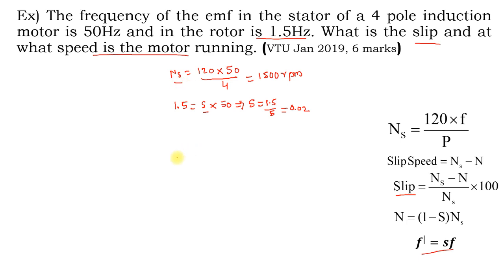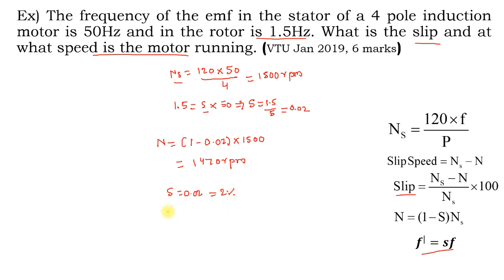Once the slip is known along with ns, the speed is easy to calculate: n = (1 − 0.02) × 1500 = 1470 rpm. So the slip of the induction motor is 0.02 (2%) and the rotor speed is 1470 rpm.